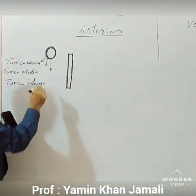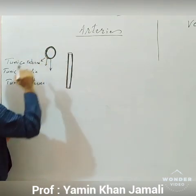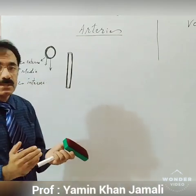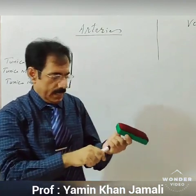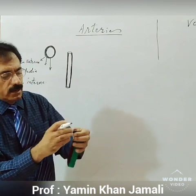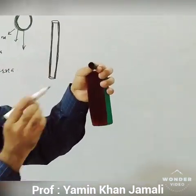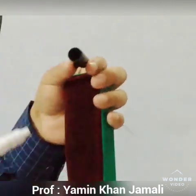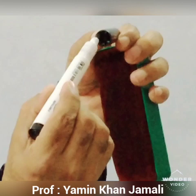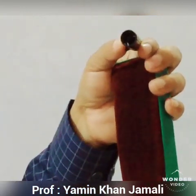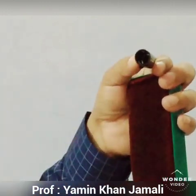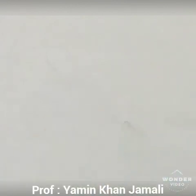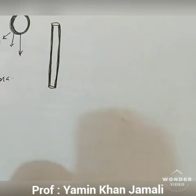Because of the thickness of the arterial walls, the lumen of the artery becomes narrow. The lumen is the total inner area of a tube — the area through which blood and other materials pass. Because of the thick walls of the arteries, the lumen is narrow.